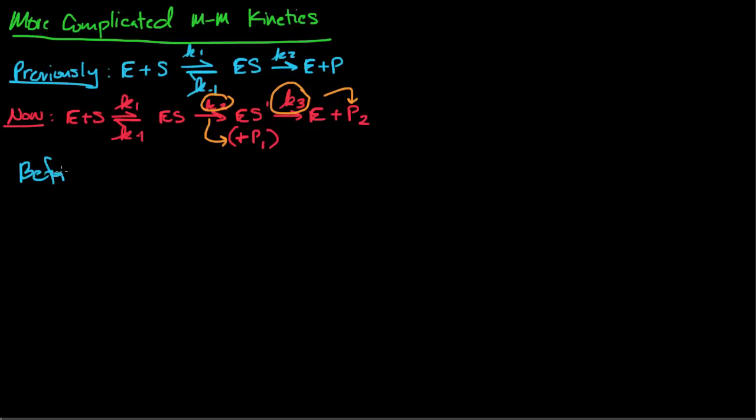So before, we had Km defined as K-1 plus K2 divided by K1. Remember, this measured our affinity, how likely the enzyme was to bind the substrate and then catalyze it.